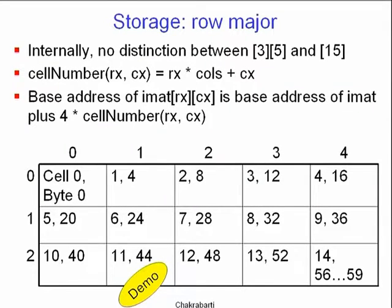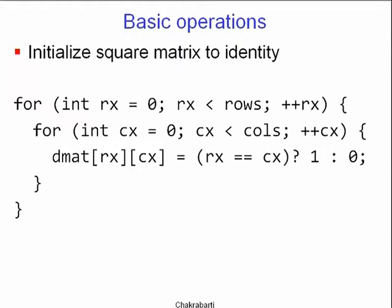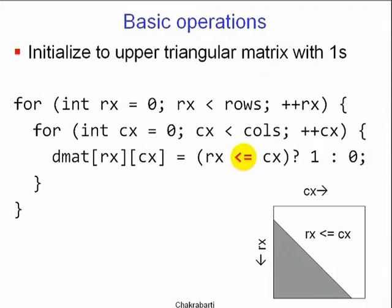We looked at basic matrix operations. You can initialize a square matrix to identity by assigning diagonals to one and off-diagonals to zero. For an upper triangular matrix with ones, you test that the row is less than or equal to the column and assign one; if Rx is greater than Cx those are zeros. Generally, you will read large matrices from data files rather than entering them by hand, but today we will set elements to specific values inside the code itself.